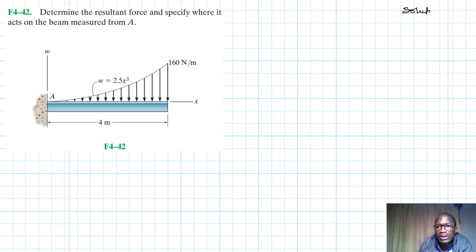This problem is coming from the Engineering Mechanics Statics textbook, 13th edition by R.C. Hibbeler. We have a load which is being governed by the function w = 2.5x³, and we have been asked to determine the resultant force and specify its location measured from A.